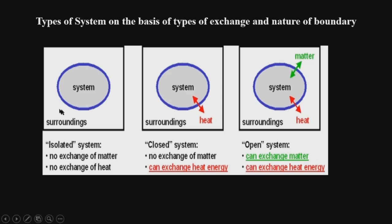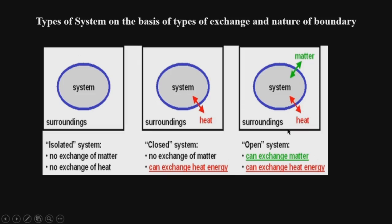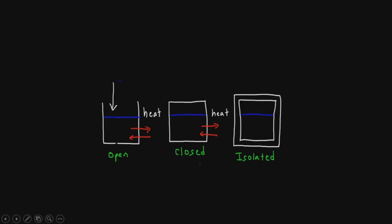A closed system is one that can exchange energy but not matter with its surroundings — heat energy can be exchanged, but mass is not exchanged. An open system is one where both heat and matter can be exchanged with the surroundings. For example, tea in an open cup is an open system. An open system exchanges both heat and matter; a closed system exchanges only heat; an isolated system exchanges nothing.